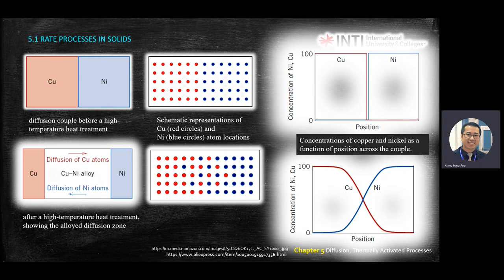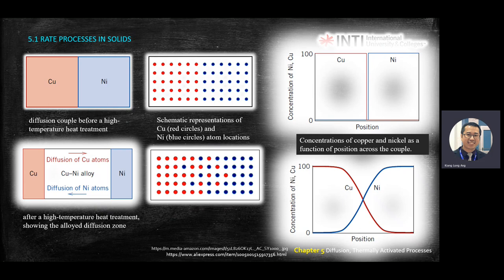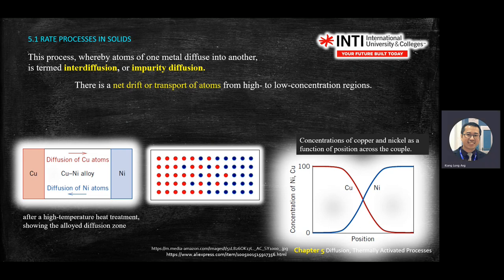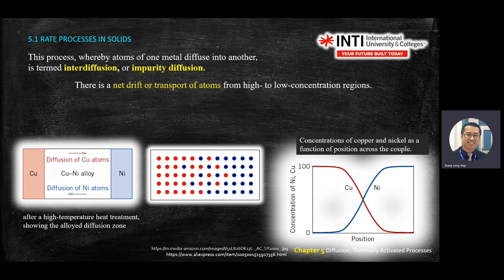From Chapter 4, there is a calculation to find concentration — given a certain mole of each element, you can calculate the percentage when they mix. The process where atoms of one metal diffuse into another is called interdiffusion, where atoms interchange positions. This is also called impurity diffusion — originally there are no alien atoms in one region, but an impurity atom goes inside.